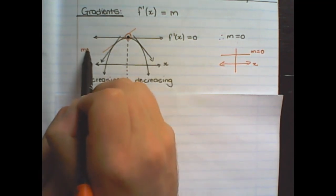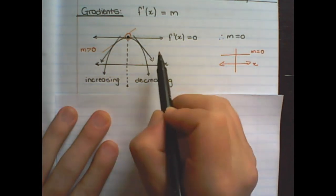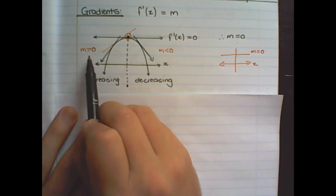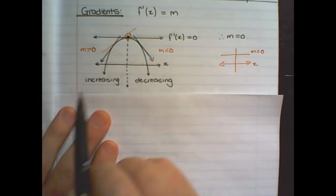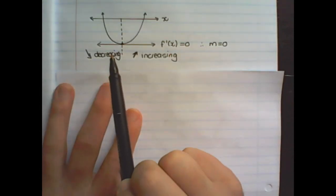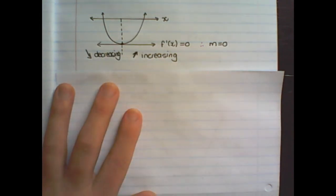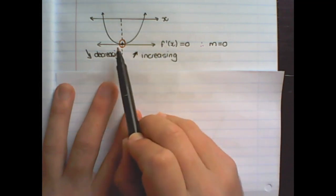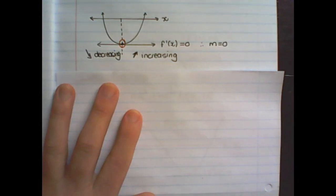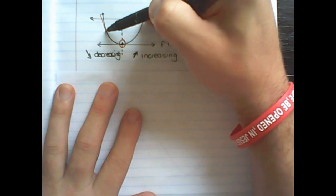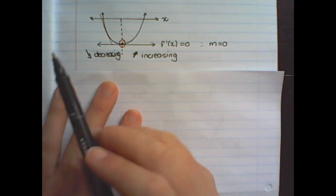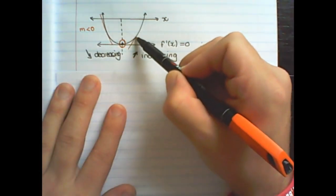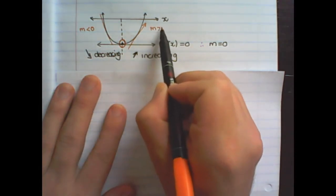An increasing gradient is a gradient that is bigger than zero, and a decreasing gradient is a gradient that is smaller than zero. You can also say an increasing gradient is a positive value and a decreasing gradient is a negative value. The gradient at a turning point is equal to zero, therefore the first derivative at the turning point will also be equal to zero. Every tangent line on the left will have a decreasing gradient, or a gradient smaller than zero, and on the right of the turning point it has an increasing gradient, bigger than zero.